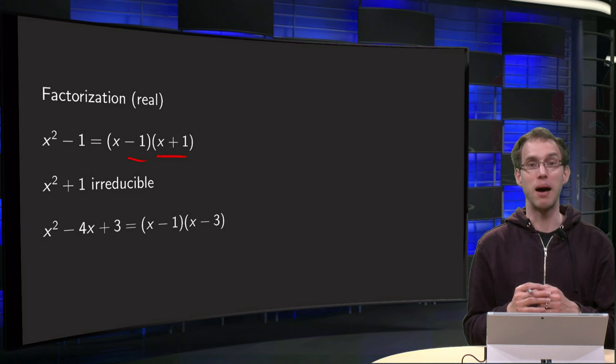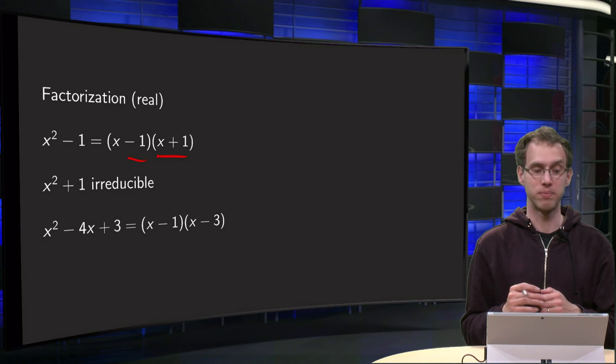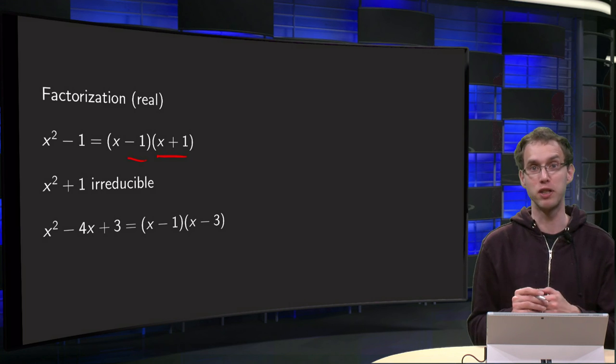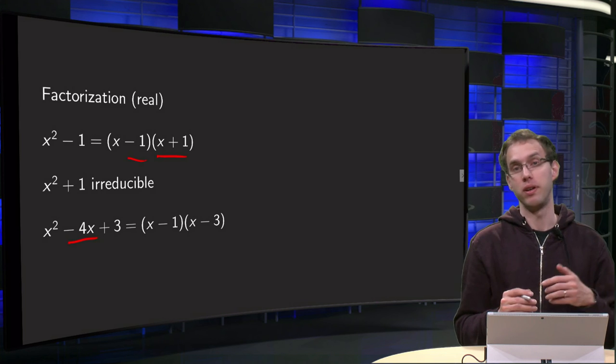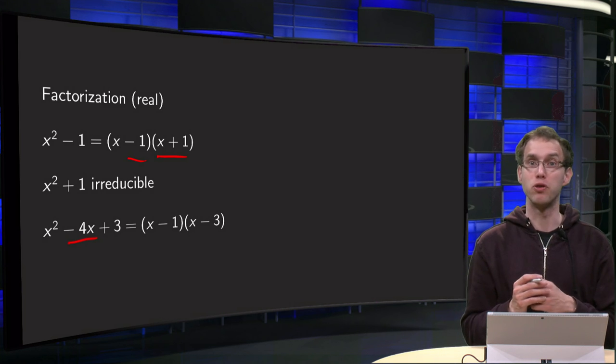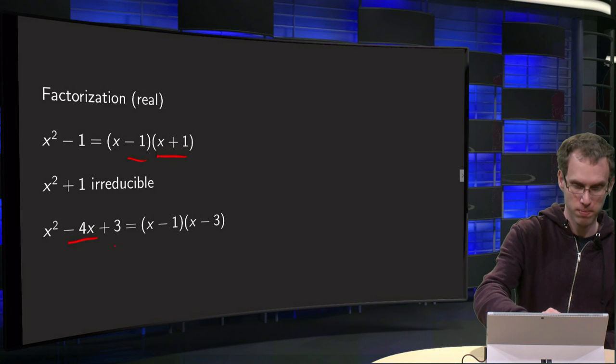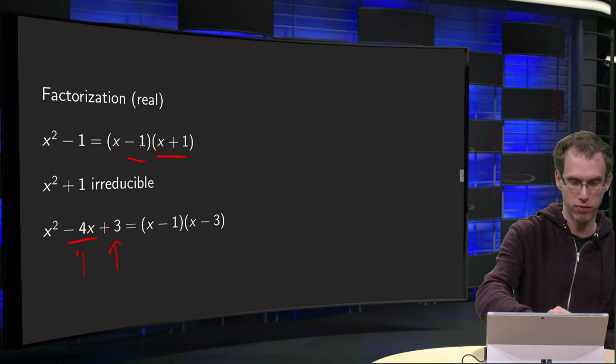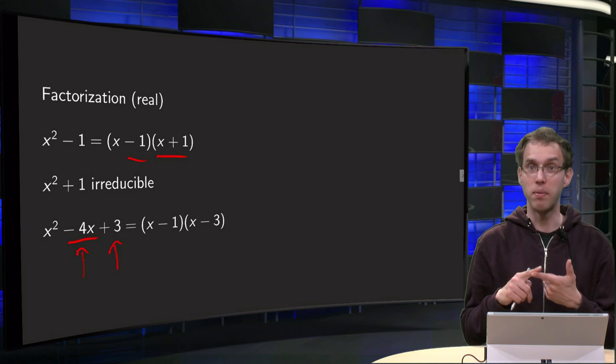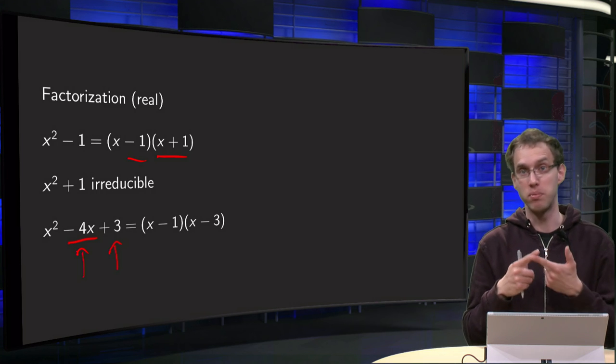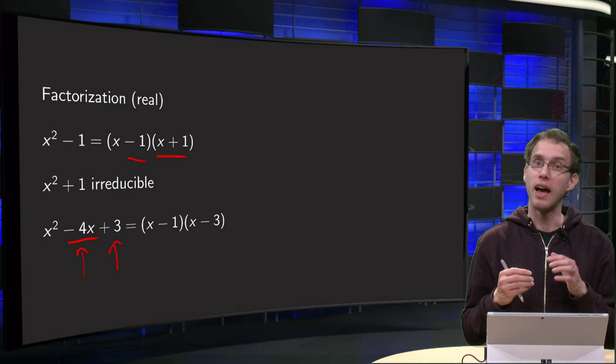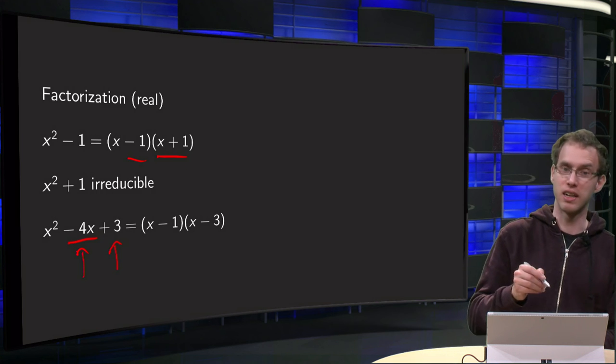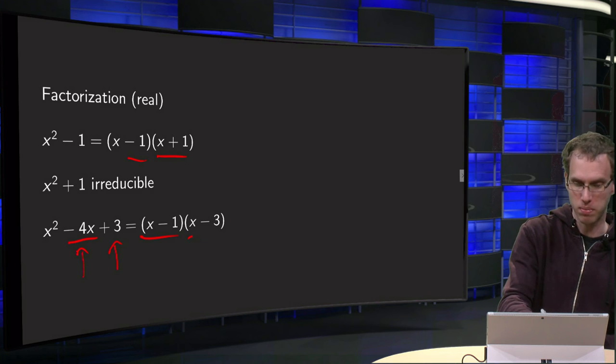Now let's try to see what happens if we include a linear term, like x² - 4x + 3. You know that you have to look for numbers whose product equals 3 and whose sum equals -4. Well, the numbers -1 and -3 do the job, because (-1)(-3) = 3, and -1 + (-3) = -4. Then you can factorize as (x - 1)(x - 3).